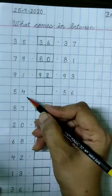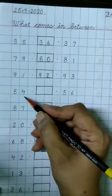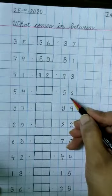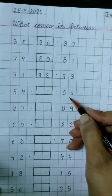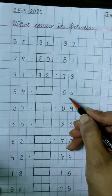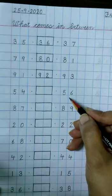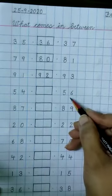Now what comes in between 54 and 56? 54, 55, 56. 55 comes in between 54 and 56.